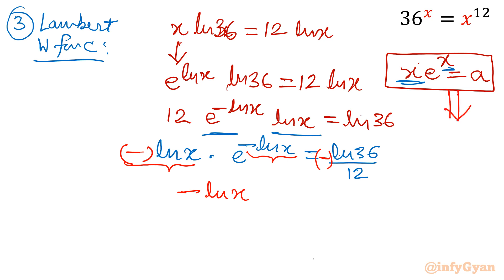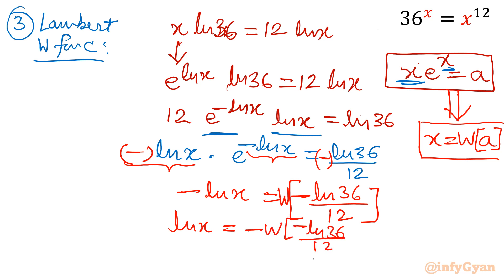The solution of this function is, or you can say, we can write anytime x is equal to Lambert W function of a constant a. So minus ln x will be equal to W of minus ln 36 over 12. Multiply both sides by minus, so ln x would be equal to minus W function negative ln 36 over 12. And in exponential form x will come out e raised to the power minus W minus ln 36 over 12. And this value is, if you will check, it is 1.624.